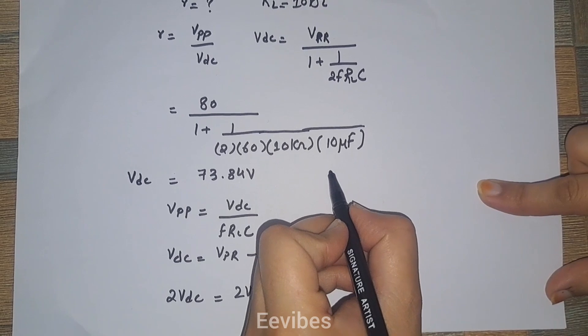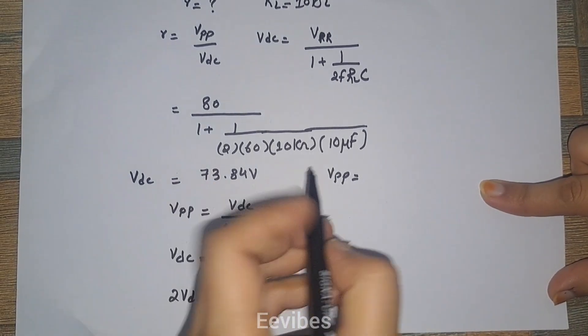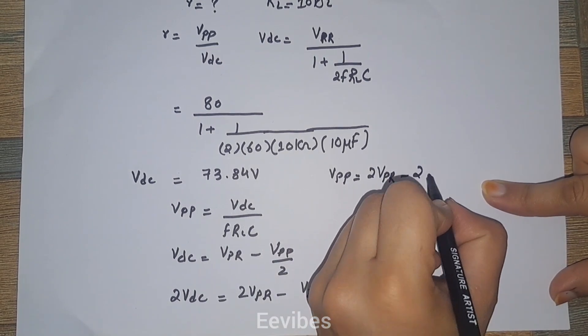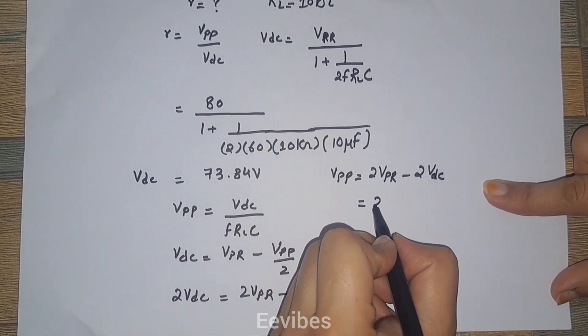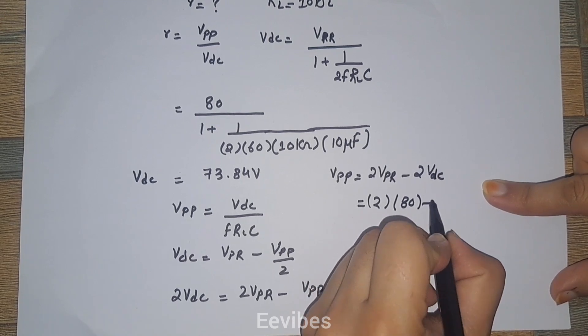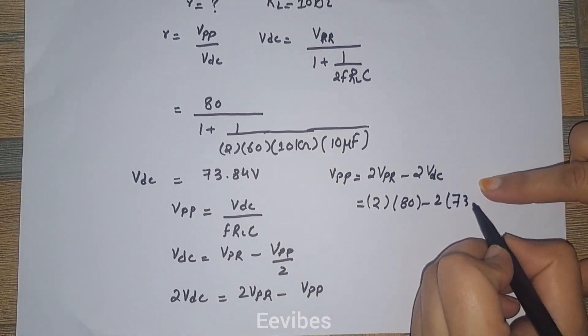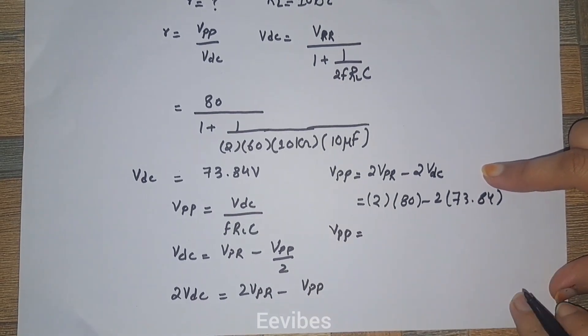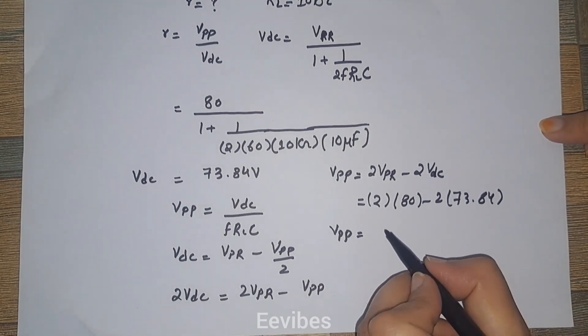So V peak to peak is equal to 2V peak rectified minus 2 times V DC. You can use any of these two formulas. So 2 times V peak rectified which is equal to 80 volts minus 2 times V DC which is equal to 73.84 volts. When you subtract these two values, you will get V peak to peak equal to 12.30 volts.